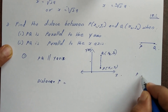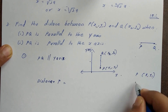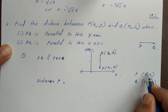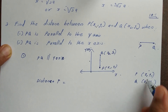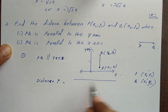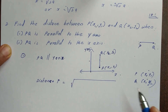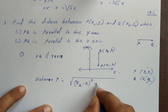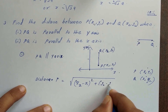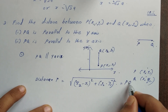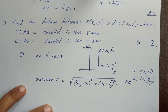Now there are two points P(x1,y1) and Q(x2,y2). There are two coordinates: x1,y1 is one coordinate and x2,y2 is another coordinate. The distance formula is: the square root of (x2 minus x1) whole squared plus (y2 minus y1) whole squared. That is the PQ distance.